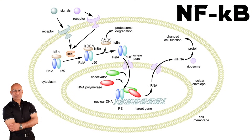To summarize: number one, stress to any cell. Number two, cells have stress-recognizing receptors. Number three, stress-recognizing receptors like TLR or NLR receptors give signals in the cytoplasm which lead to phosphorylation of NF-kappa B inhibitors. NF-kappa B inhibitors are destroyed, and once destroyed, NF-kappa B protein is set free to move from the cytosol to the nucleus.